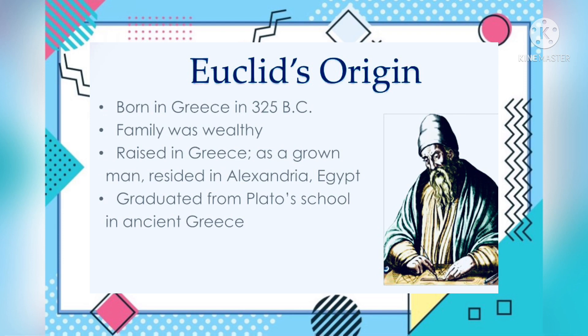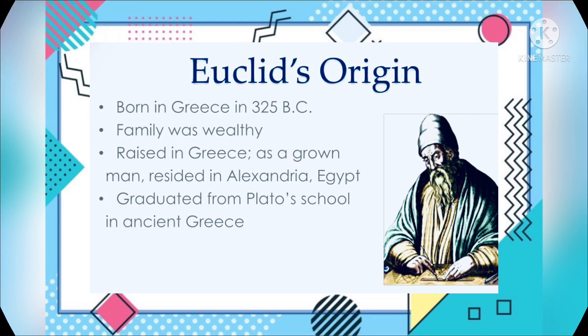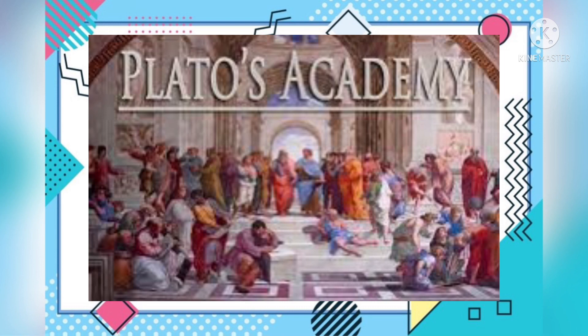Almost nothing is known of his life, and no likeness or first-hand description of his physical appearance has survived antiquity, and so depictions of him, with a long flowing beard and a cloth cap, in works of art are necessarily the products of the artist's imagination. He probably studied for a time at Plato's Academy in Athens, where many mathematicians like him thought and learned along with him.